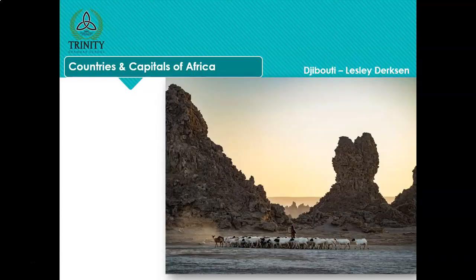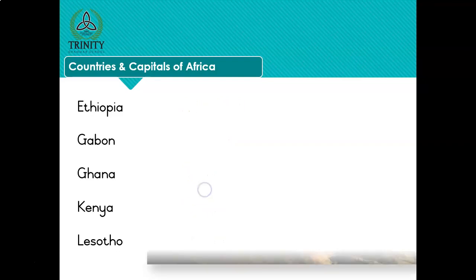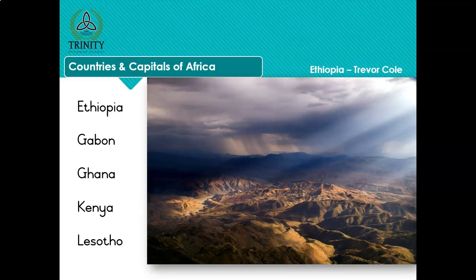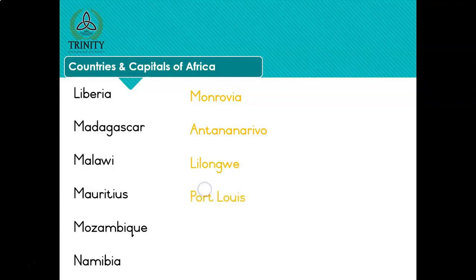And here's a beautiful photo of Djibouti - not the capital but the country. Ethiopia - Addis Ababa. Gabon - Libreville. Ghana - Accra. Kenya - Nairobi. Lesotho - Maseru. And here we go, there's a lovely photo of Ethiopia - that cloudscape landscape with very dramatic lighting.